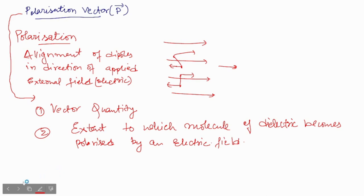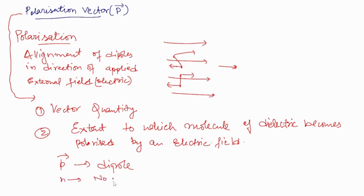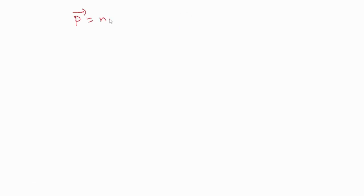Your polarization vector is defined as follows. Suppose vector P is your dipole moment and n is your number of atoms per unit volume. Then the polarization vector can be defined as n into vector P — that is, n times the dipole moment vector.